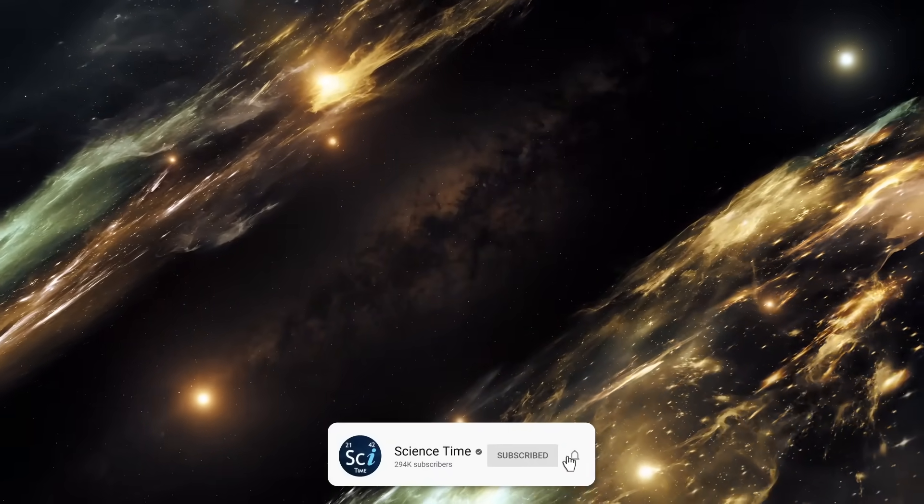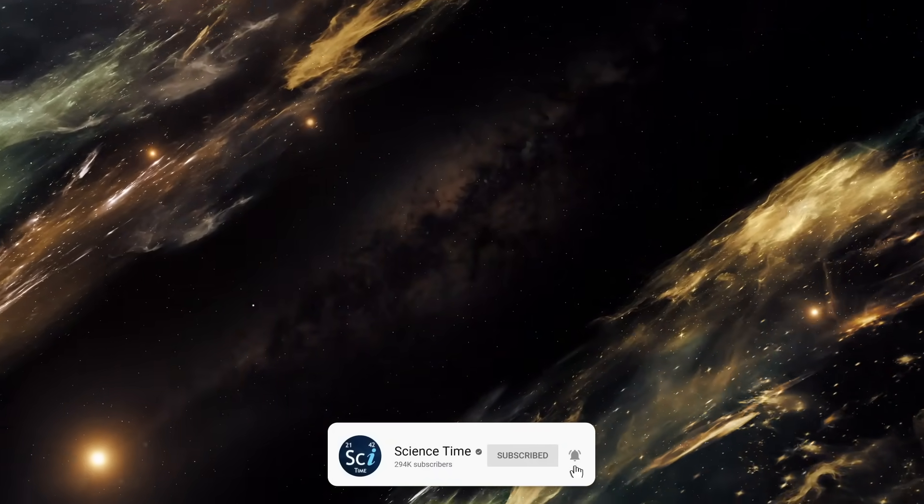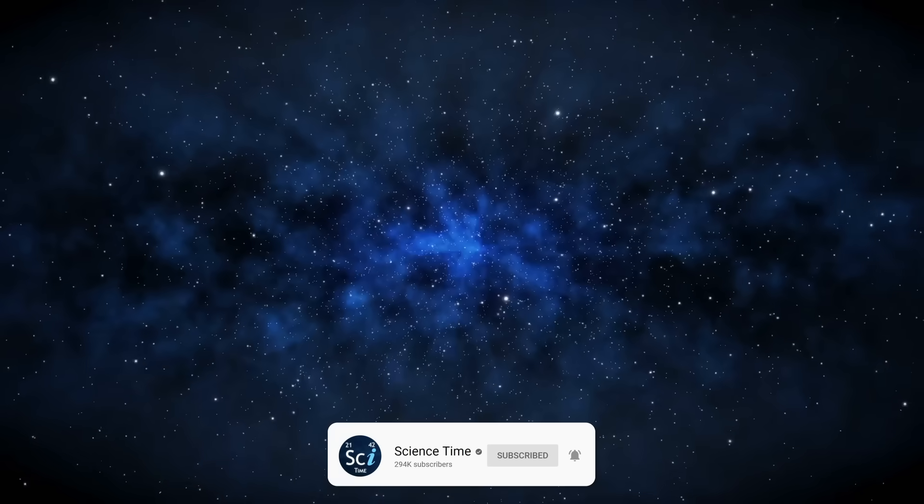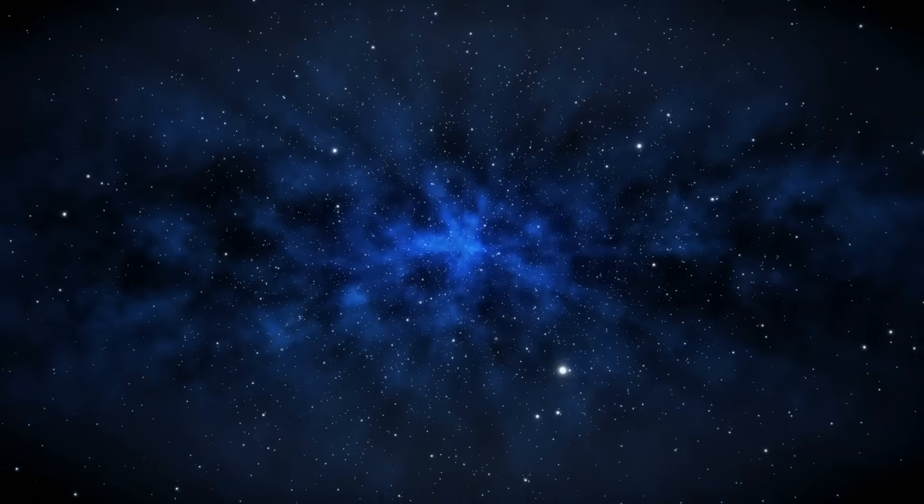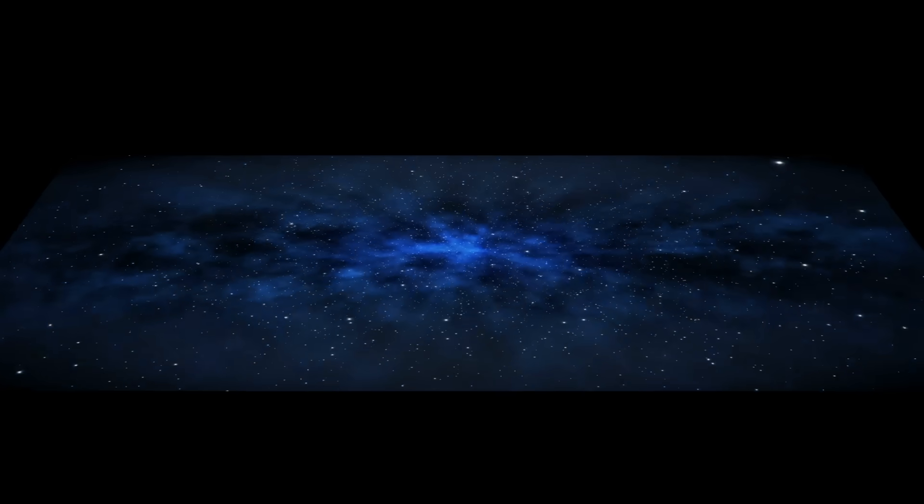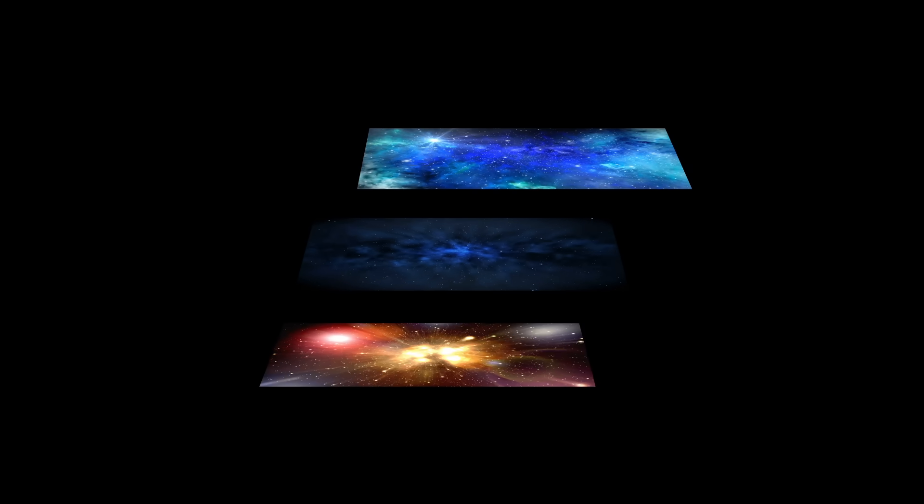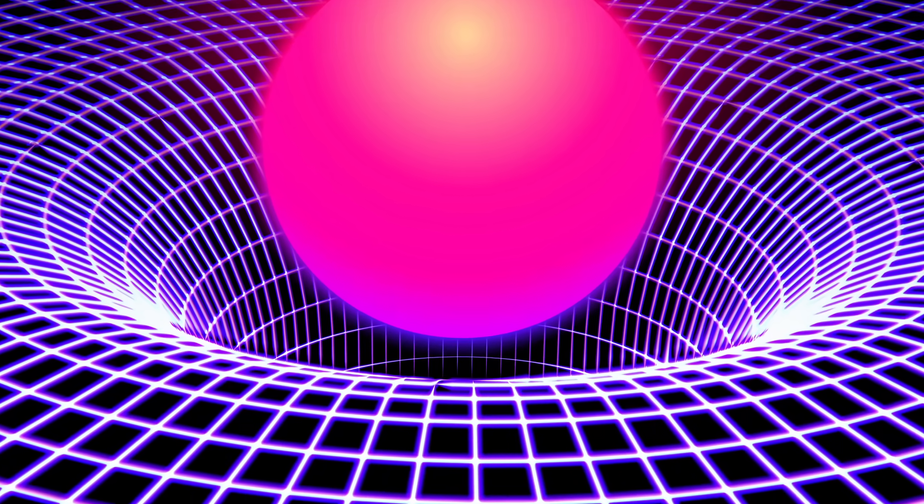So if you imagine slices of space at different times, you just slice the universe and it can have a geometry. It can be flat like a tabletop, or it could be curved like a sphere, or it could be curved in the opposite direction, sort of like a saddle or a bowl. And we can measure that.